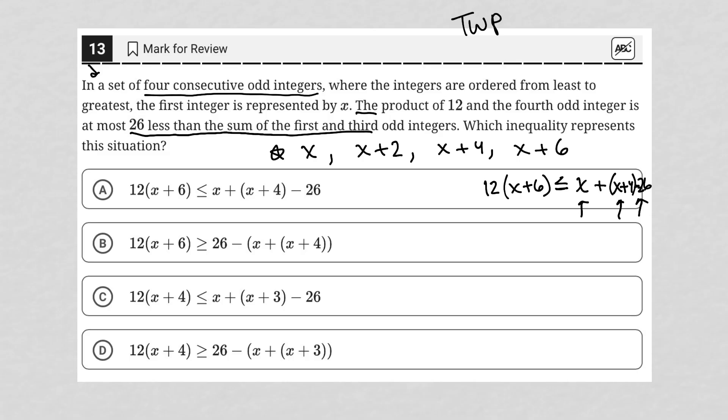So choices A and B at least have the 12 times X plus six. C and D do not. So C and D are gone. And then it looks like for choice A, I have my first odd integer plus my third odd integer minus 26, which is exactly what I want. So I'm pretty certain that that's the right answer.